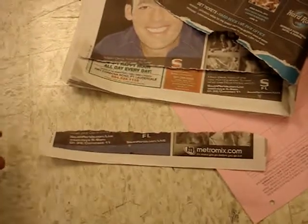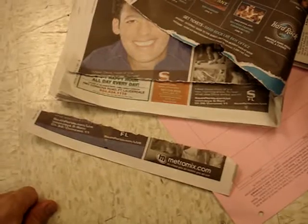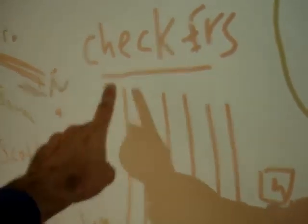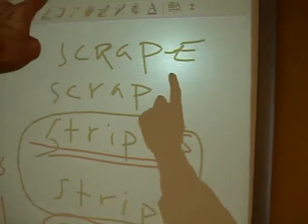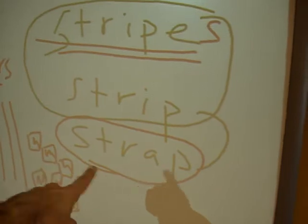So we have 'strip' — here's a strip of paper, it's long. This is a strip of paper. And then you can have 'stripes' — these right here are stripes on the wall. So that's scrape, scrap, stripes, strip. Then there's 'strap' — a strap is something like a handle. You need to put the strap on your shoulder so that it pulls it up. That's a strap.